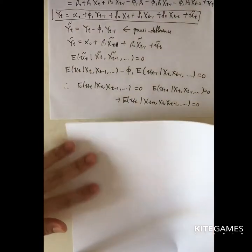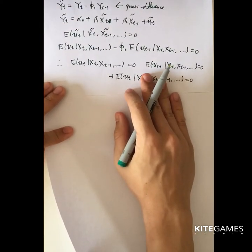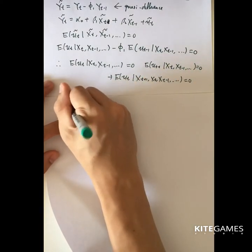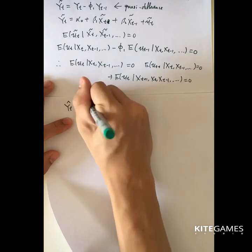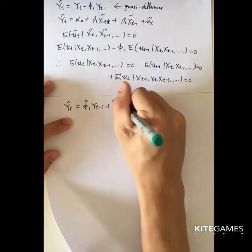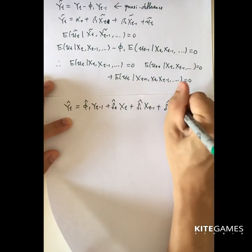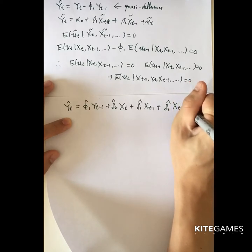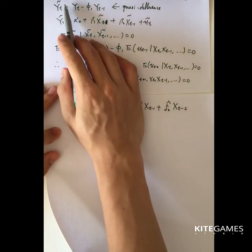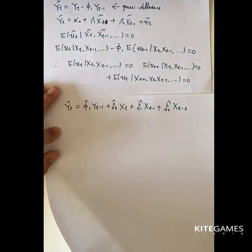What you are estimating is: yt-hat equals phi_1-hat times yt minus 1 plus delta_0-hat xt plus delta_1-hat xt minus 1 plus delta_2-hat xt minus 2. You can ignore the alpha_0 here because after taking the quasi-difference and subtracting the lag, the constant term becomes zero.